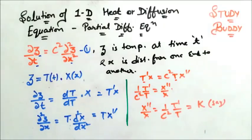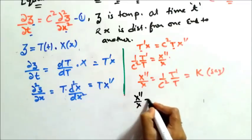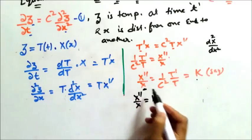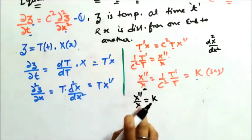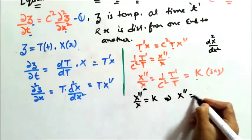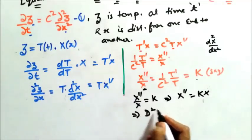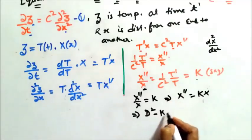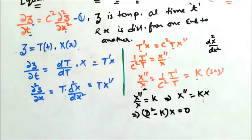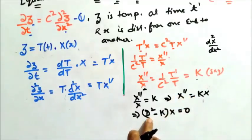Now we solve each part separately. For X: X-double-dash over X equals K, which can be rewritten as X-double-dash equals K times X, or equivalently D squared minus K times X equals zero. This is the ODE we need to solve for X.